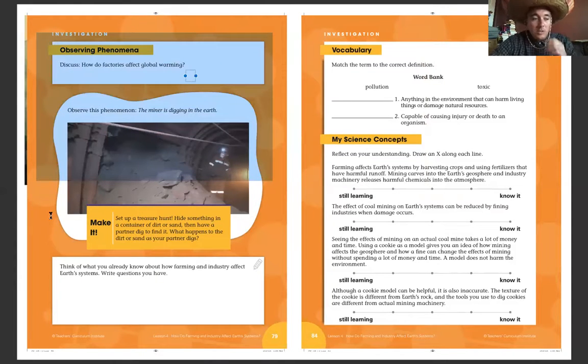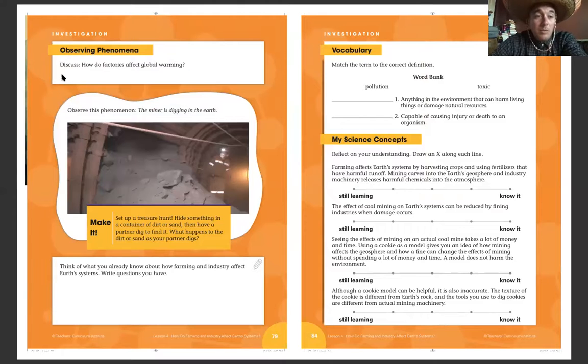And again, you'll get this. You'll use Notability. You put a text box here, or if you're really good at writing with your finger, you can write there too. It says observe this phenomenon: The miner is digging in the earth.